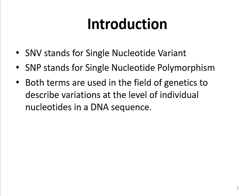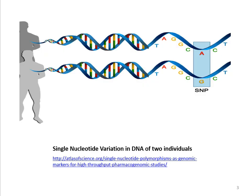For example, here we have two individuals. The first individual has the same DNA sequence except at one nucleotide place where it is A. The second individual has the same DNA sequence as the first person, but has G at the same place where the first person has A.